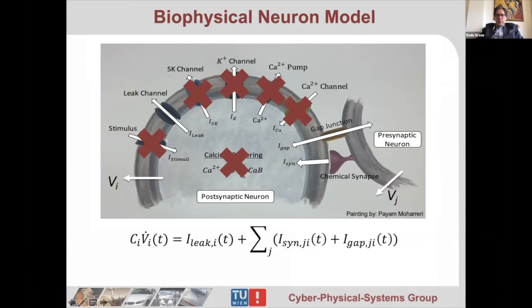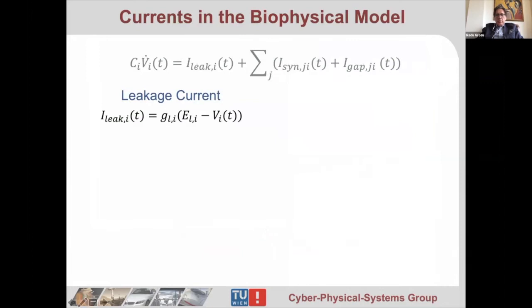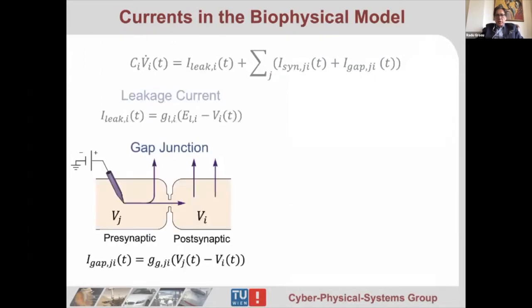The leakage current is essentially a proportional controller where the error is the difference of potential between the resting potential and the membrane potential, and the proportionality constant is the conductance. The gap junction current is also a proportional controller where the error is the difference of potential between the two neurons, and the proportionality constant is the conductance between the two neurons. It's just a small channel that resists the exchange of ions.